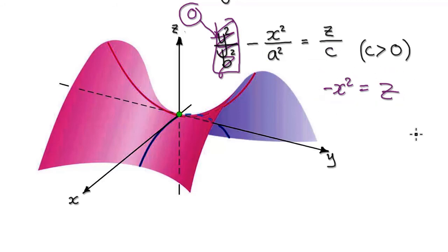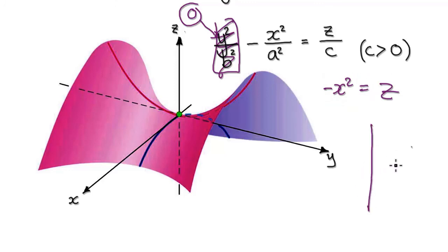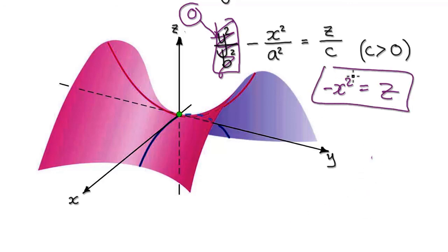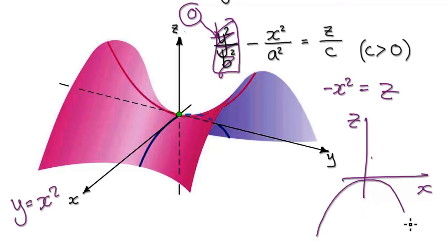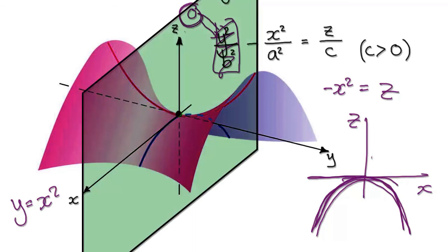That will give you this. If you sketch a graph of this — z is the height and x goes along here — it's like sketching y equals negative x squared. It would give you a negative quadratic, like this. When you put 0 into the y, imagine a vertical sheet of paper. In the y direction, this is 1, 2, 3, negative 1, negative 2, and so on.